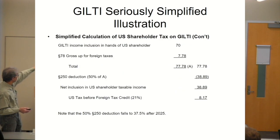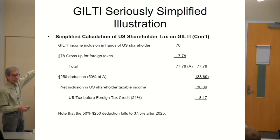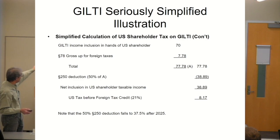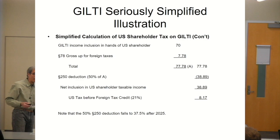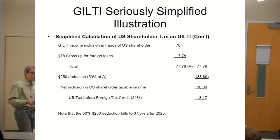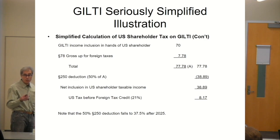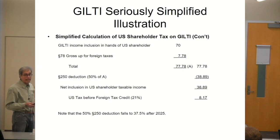When we look at the U.S. shareholder's tax calculation: he had to include GILTI of 70, add on the Section 78 gross-up, comes to a total, then subtract off the Section 250 deduction — which is that 50% Jen found when she looked at the code. Subtract off the 50%, and the net amount included is 38.89 additional taxable income, times 21%, gives us 8.17.